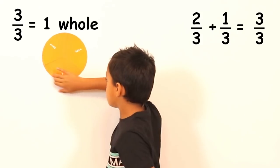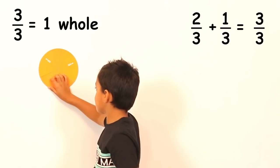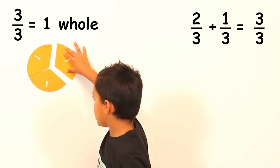Very good, so three thirds is a whole. And how does three thirds look as a fraction if you had to describe it using words? Three over three. Very good.